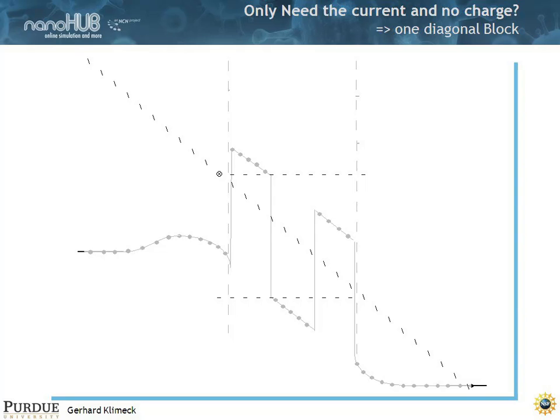You need the one diagonal block. That's kind of interesting. And what's your physical insight for that? Well, if it's coherent transport through the device, that means current is continuous throughout the device. There's no current loss, no current gain.